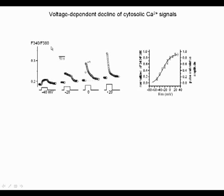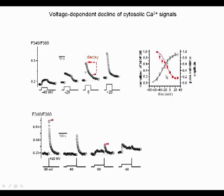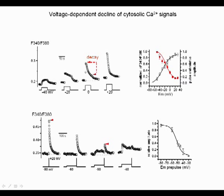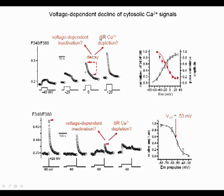These figures show cytosolic calcium transients elicited by voltage pulses of 50 seconds duration and increasing amplitude. Amplitude of the transient increased with depolarization, but overall the decay was more and more pronounced with depolarization, giving rise to a decreasing relationship shown in red. When conditioning depolarization was applied, the calcium transient was reduced as the conditioning depolarization went higher, and half-maximum reduction of the calcium transient was observed at minus 53 mV on average. Both voltage-dependent inactivation and SR calcium depletion should contribute to the observed calcium decline, but the two could not be discriminated.